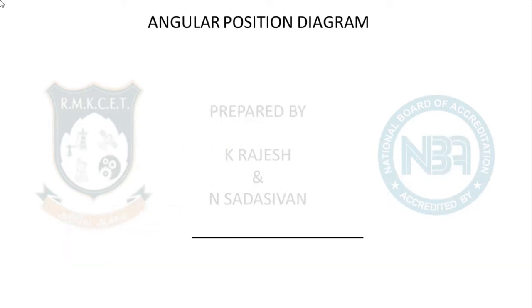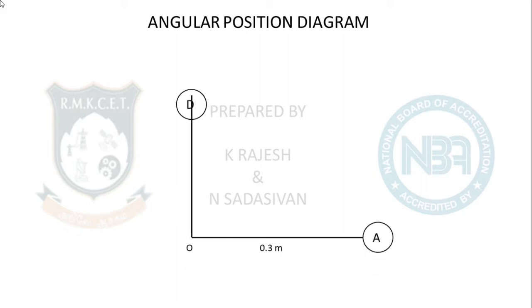Now look at the unknowns in the angular position diagram. I need to draw engines A and D — they are 90 degrees apart as given. B and C directions are unknown. The force column has two unknowns; the couple column has one unknown (B = 0 in the couple column). Therefore, do the couple polygon first.